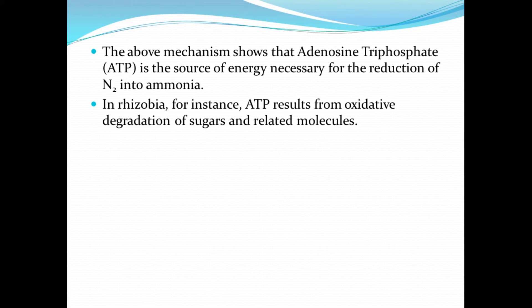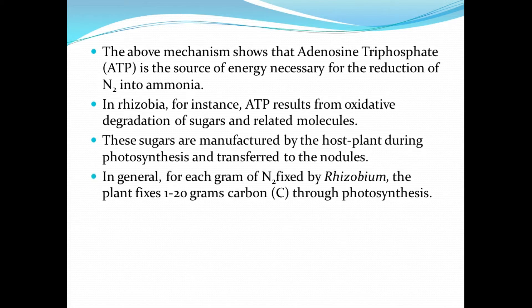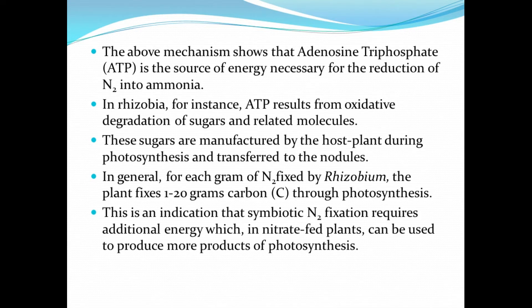In Rhizobia, ATP results from the oxidative degradation of sugars and related compounds — sugars manufactured by the host plant during photosynthesis and transferred to the nodules. For each nitrogen fixed by Rhizobium, the plant fixes 1 to 20 grams of carbon through photosynthesis. This indicates that symbiotic nitrogen fixation requires additional energy, which in nitrate-fed plants can be used to produce more products of photosynthesis.